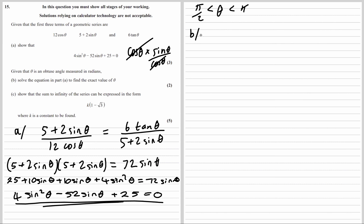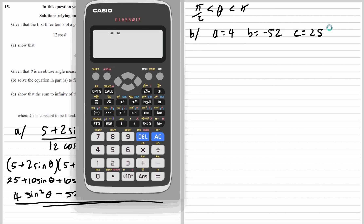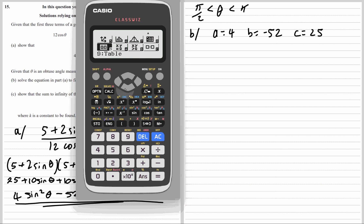We'll use the calculator to solve this quadratic. So we've got A, B, C: A is 4, B is negative 52, C is 25. We'll use the polynomial degree 2 solver on the calculator, entering 4, negative 52, and 25.